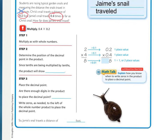Our problem is four-tenths times two-tenths, because it's four-tenths times as far as Chris's snail, and Chris's snail was two-tenths. Step one when multiplying decimals is to multiply them as whole numbers, ignoring the decimal. So they did two times four equals eight.